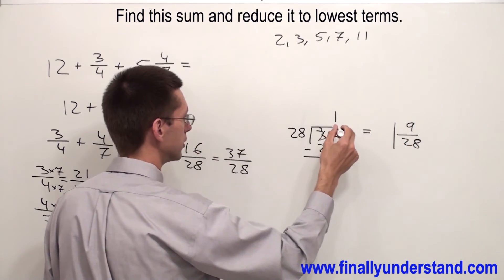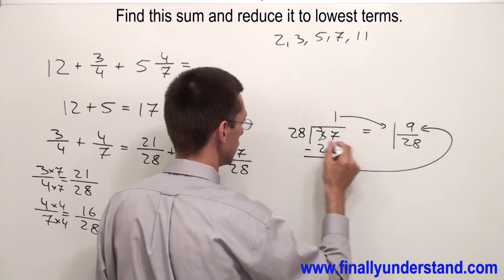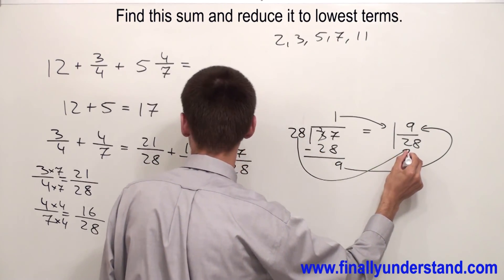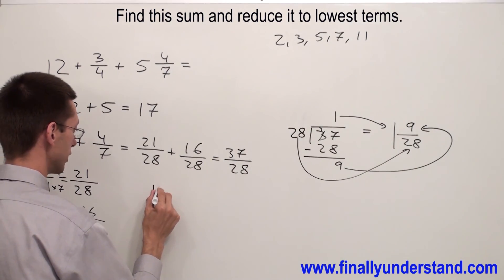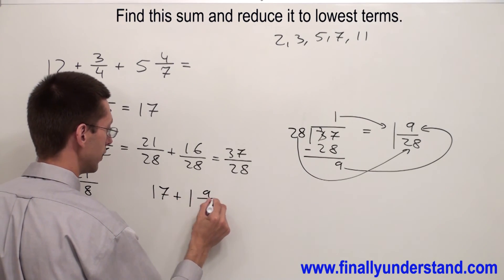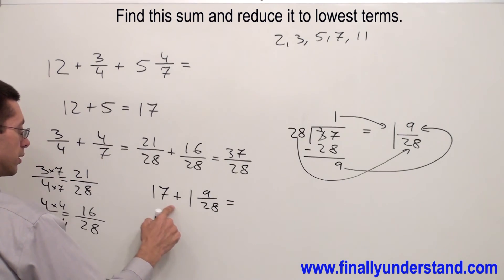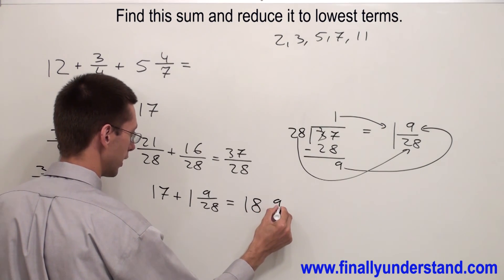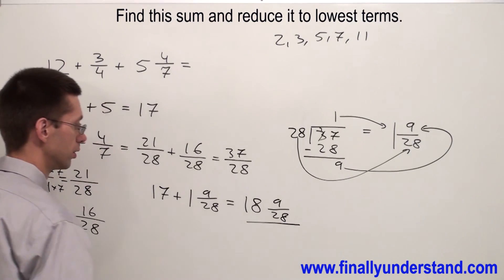That's why my answer from this division is 1 and 9 over 28. Please keep in mind that the top number will go always to the front, the remainder will go always to the numerator, and the divisor will go to the denominator. Don't forget about this 17. So the final answer is going to be 17 plus 1 and 9 over 28. 17 plus 1 is 18 and I have 9 over 28. And this is the solution to this problem.